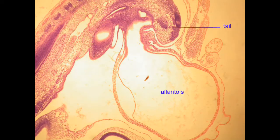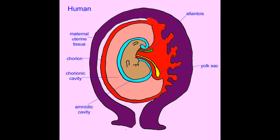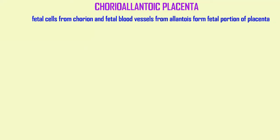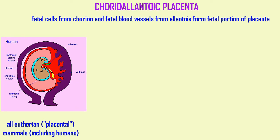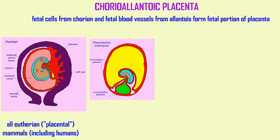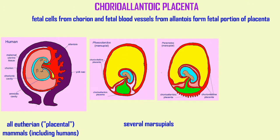There is a bag which can store urinary waste known as the allantois, depicted here in green. Blood vessels from the allantois can contribute to the placenta in a chorioallantoic placenta. In addition to eutherian or placental mammals possessing a chorioallantoic placenta, this is also found in several marsupials and two genera of lizards — skinks.